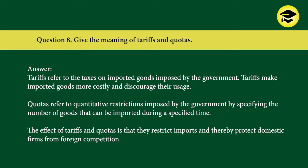Question 8: Give the meaning of tariffs and quotas. Answer: Tariffs refer to taxes on imported goods imposed by the government. Tariffs make imported goods more costly and discourage their usage. Quotas refer to quantitative restrictions imposed by the government by specifying the number of goods that can be imported during a specified time. The effect of tariffs and quotas is that they restrict imports and thereby protect domestic firms from foreign competition.